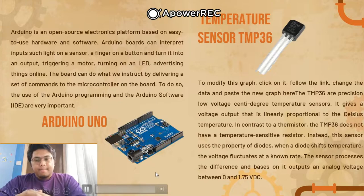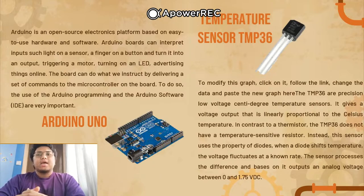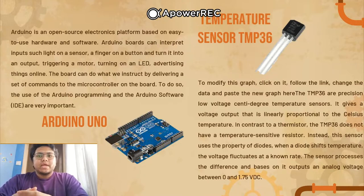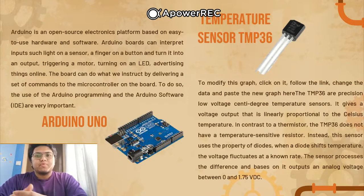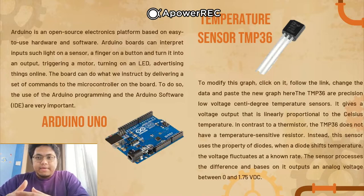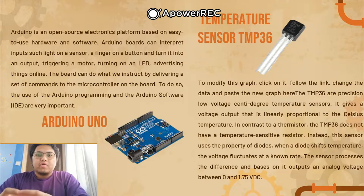There are 10 different components used in this project. The first is Arduino Uno — an open-source electronic platform based on easy-to-use hardware and software. Arduino boards can interpret inputs such as light on a sensor or a finger on a button and turn them into outputs like triggering a motor, turning on an LED, or posting things online. The board is instructed by delivering a set of commands to the microcontroller using the Arduino programming language and the Arduino software IDE.